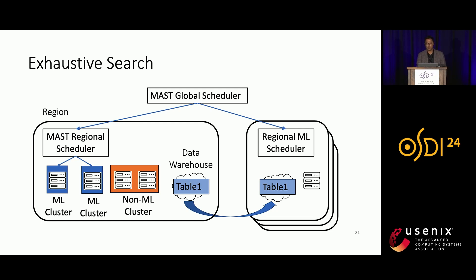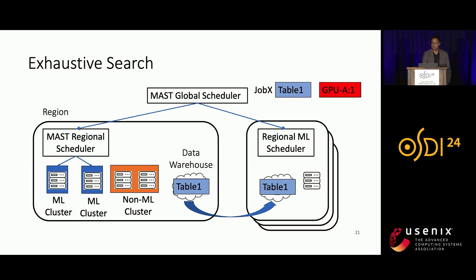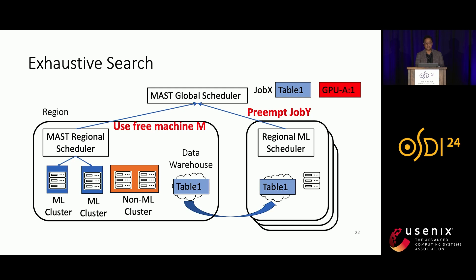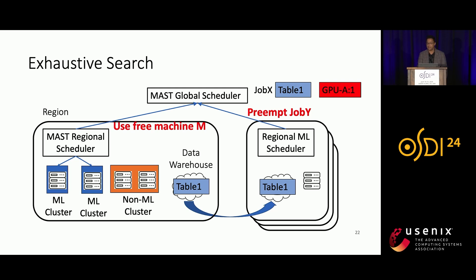Concretely, when the global scheduler needs to schedule a job, it first finds all candidate regions that hold the input table. If there is only one candidate region, it simply chooses that region. If there are multiple candidate regions, the global scheduler asks every candidate regional scheduler to provide an allocation plan. It then compares those plans to find the best one based on certain criteria—for example, preferring a region that can allocate the job using free machines over one that must preempt an existing job. Please refer to the paper for all such criteria.